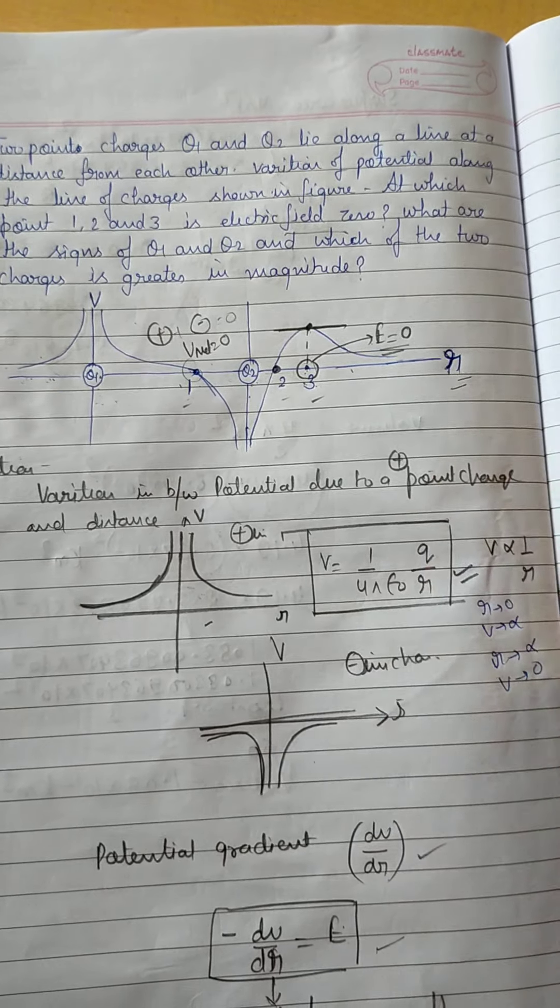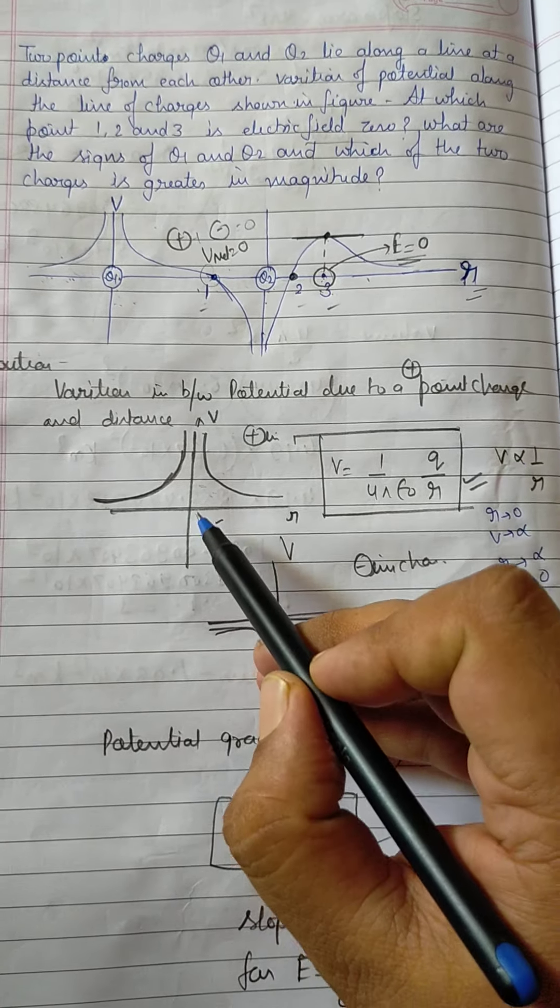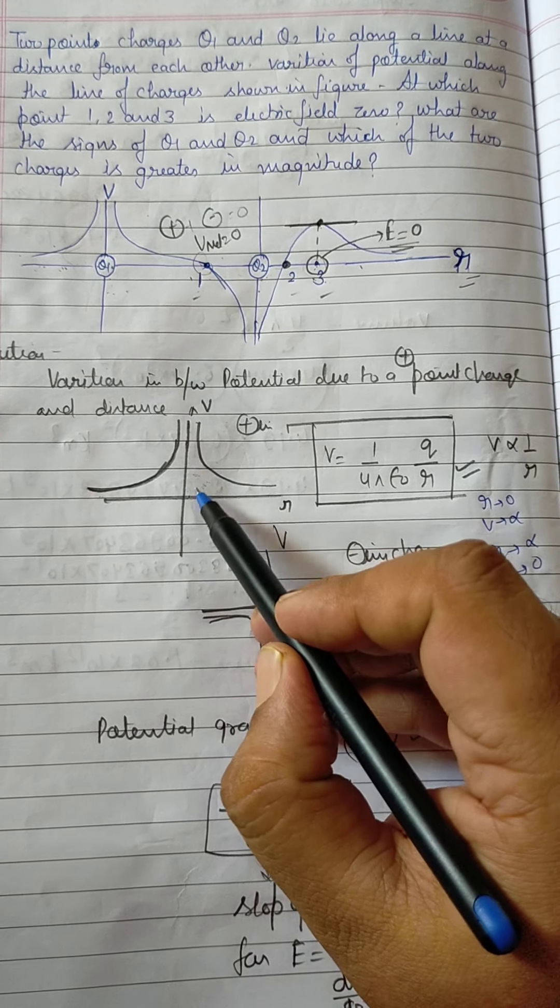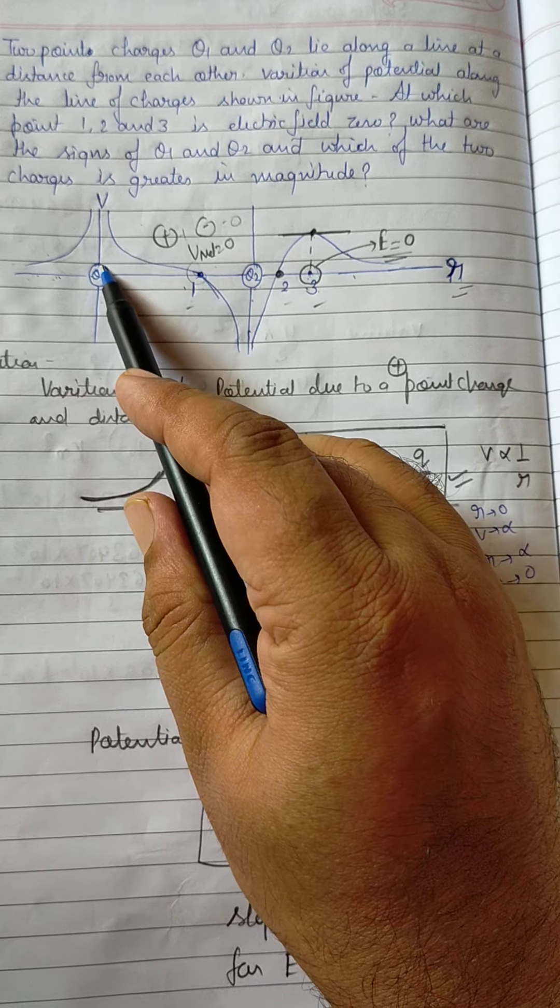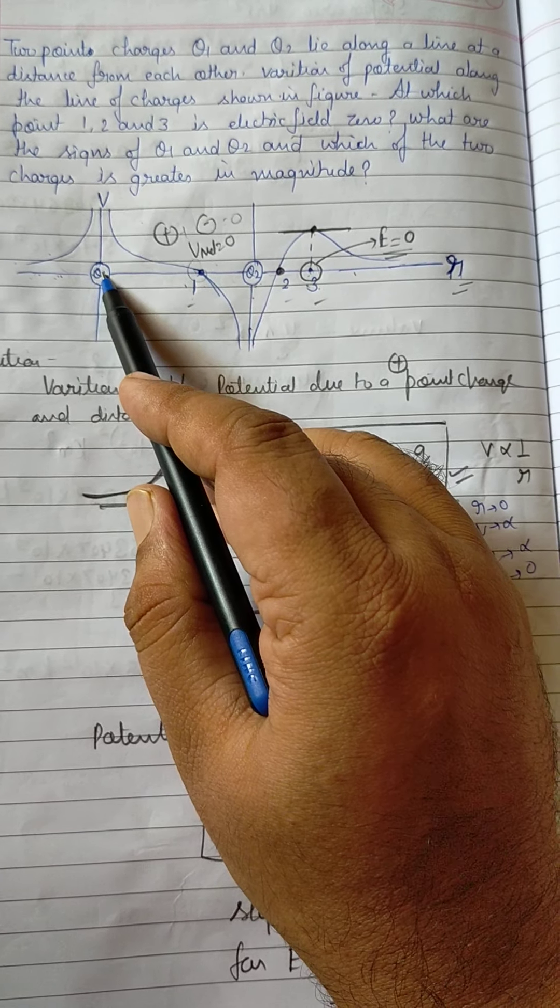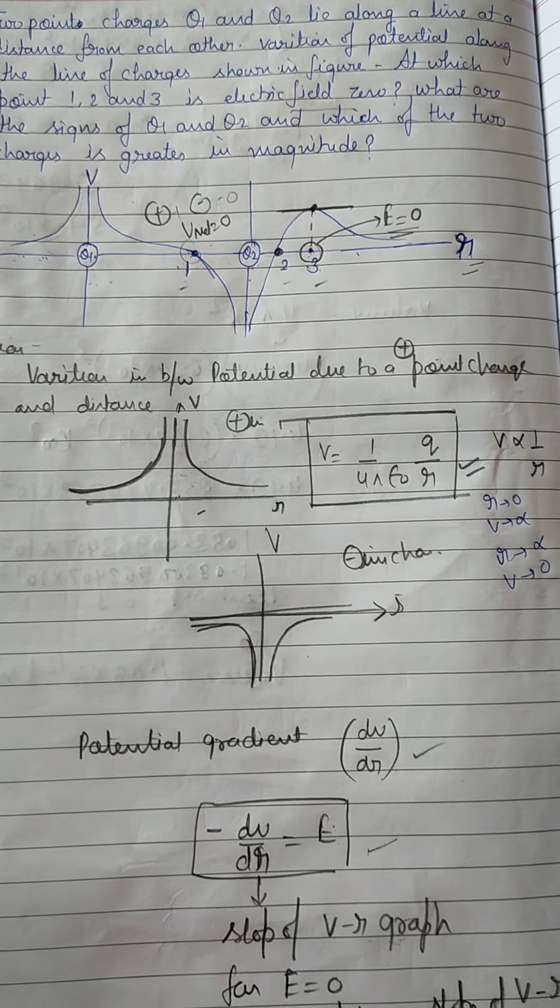Okay, तो यह first part आपका यहां से हो जाएगा। Second part, what is the sign? तो sign के लिए आपको मैंने पहले ग्राफ के लिए बता दिया था—positive का ग्राफ upward और negative में downward। तो यह ग्राफ आपका upward है, इसलिए यह charge positive, और यह ग्राफ आपका downward है इसलिए charge negative।